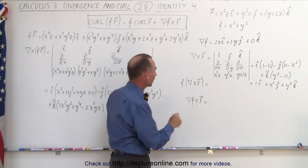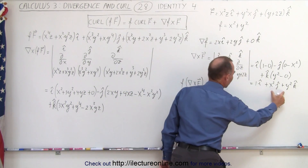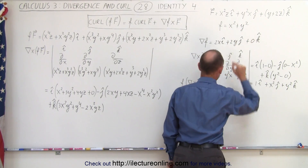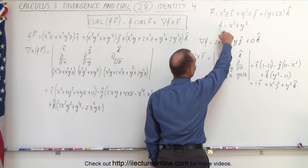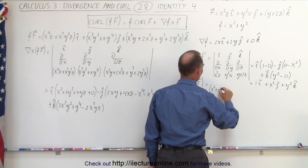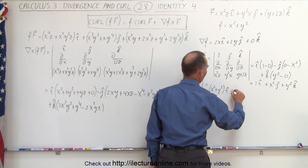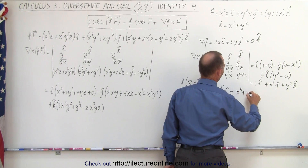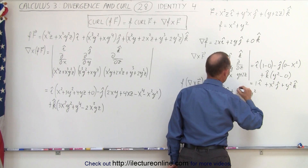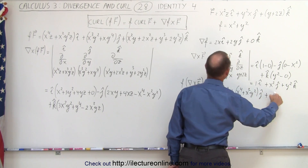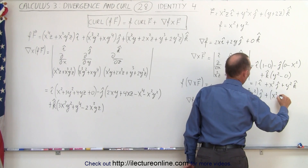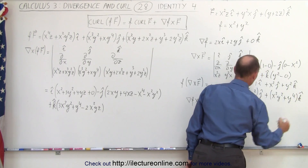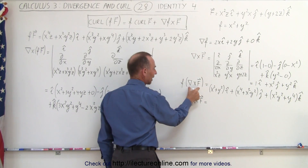Now we multiply the scalar function times the curl we just found. The scalar function is X squared plus Y squared, so we multiply each component by it. This gives X squared plus Y squared in the I direction, plus X to the fourth plus X squared Y squared in the J direction, plus X squared Y squared plus Y to the fourth in the K direction. That is the product of the scalar field times the curl.